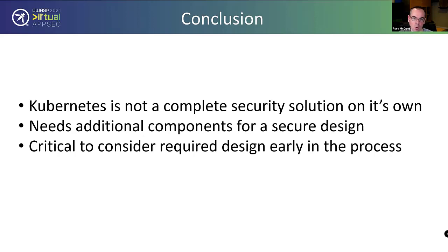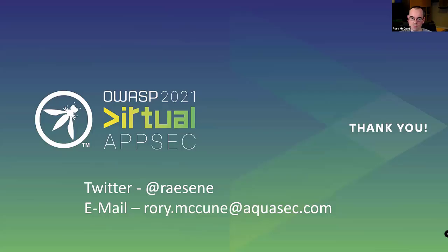In conclusion: hopefully what you've grasped from this talk is that Kubernetes is not a complete security solution on its own — that's deliberate, that's how the project designed it. It does need additional components for secure design. You can't just put Kubernetes in and have it run securely. You need external authentication, external networking support for good network policies, and admission control, amongst other things. And ideally it's critical to consider the security requirements as early in the design process as possible. I've seen how hard it is to retrofit security controls into clusters once you've got 100 applications running there. Get that done early, and that should make things hopefully less painful for your developers when they're deploying to clusters.